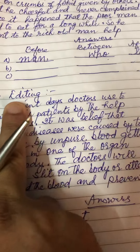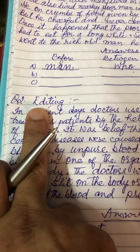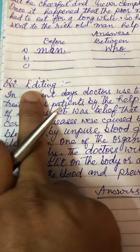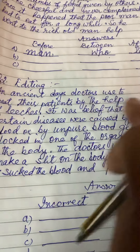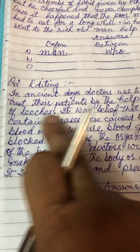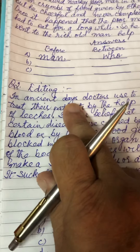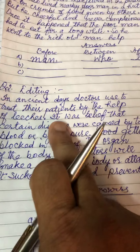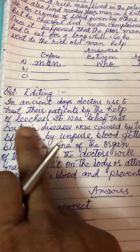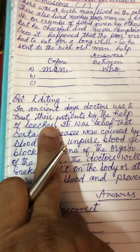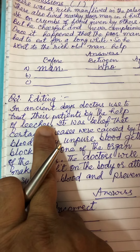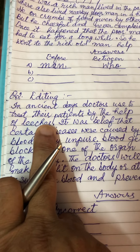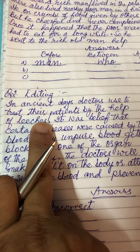Editing. In editing, there is a mistake in each line. For example: 'In ancient days, doctors used to treat their patients by the help of leeches.' In this line, there is a mistake related to past tense.